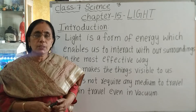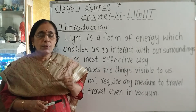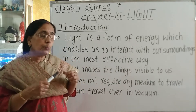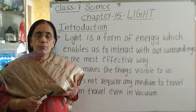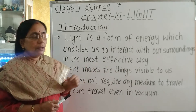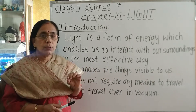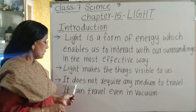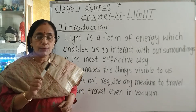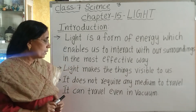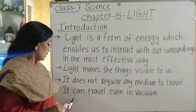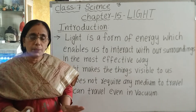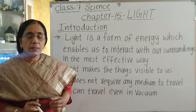If there is no light, we won't be able to see anything around us. Light is a form of energy that does not require any medium to travel — it can even travel in vacuum. Vacuum means empty space where there is no medium, nothing at all, yet light rays can travel through it.